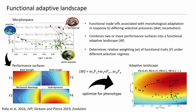We then combined these performance surfaces together into an adaptive landscape by determining the combinations of functional traits that help optimize for the mean phenotype of each locomotor ecology — terrestrial, semi-aquatic, and marine turtles. Here you can see one of those adaptive landscapes, specifically for our terrestrial turtles. The adaptive peak is in the top right-hand corner of morphospace with a deep red color indicating a very high performance peak. You can also see the dashed lines called Pareto fronts — lines connecting two peaks, representing the highest ridge from peak to peak and the optimal path to take when transitioning between ecologies.